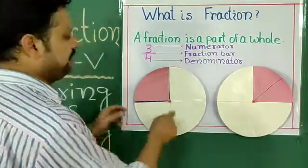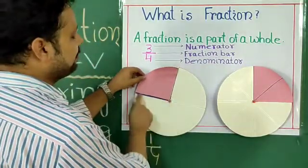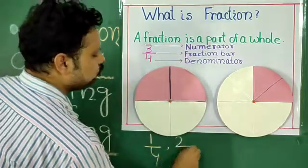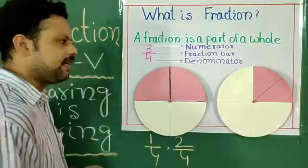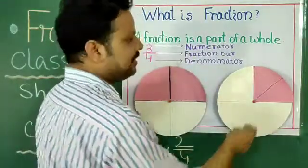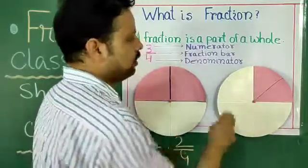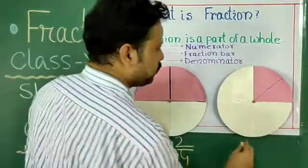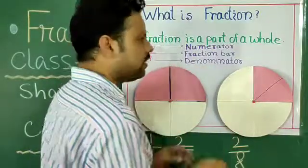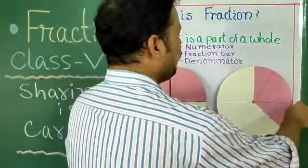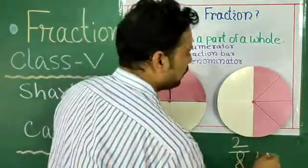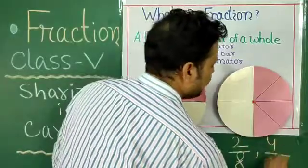Now say we want to write 2 by 4. See, this one — 2 by 4. The coloured portion is only 2 and everyone has equal parts, so easily we can write 2 by 8. Here also, check once — half of portion — that's why we can write 4 by 8.